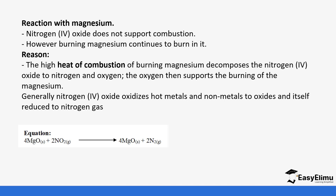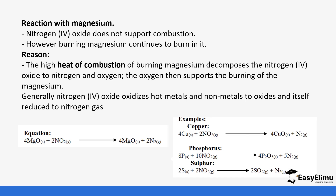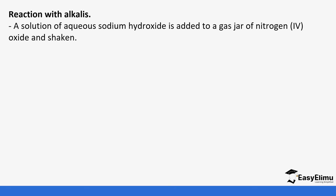Generally, nitrogen 4 oxide oxidizes hot metals to their oxides and is itself reduced to nitrogen gas — similar to nitrogen 2 oxide. Magnesium reacts with NO₂ to form magnesium oxide and nitrogen. Copper reacts with NO₂ to form copper oxide and nitrogen. Phosphorus reacts to form phosphorus 5 oxide plus nitrogen gas. Sulfur reacts to form sulfur 4 oxide and nitrogen gas.